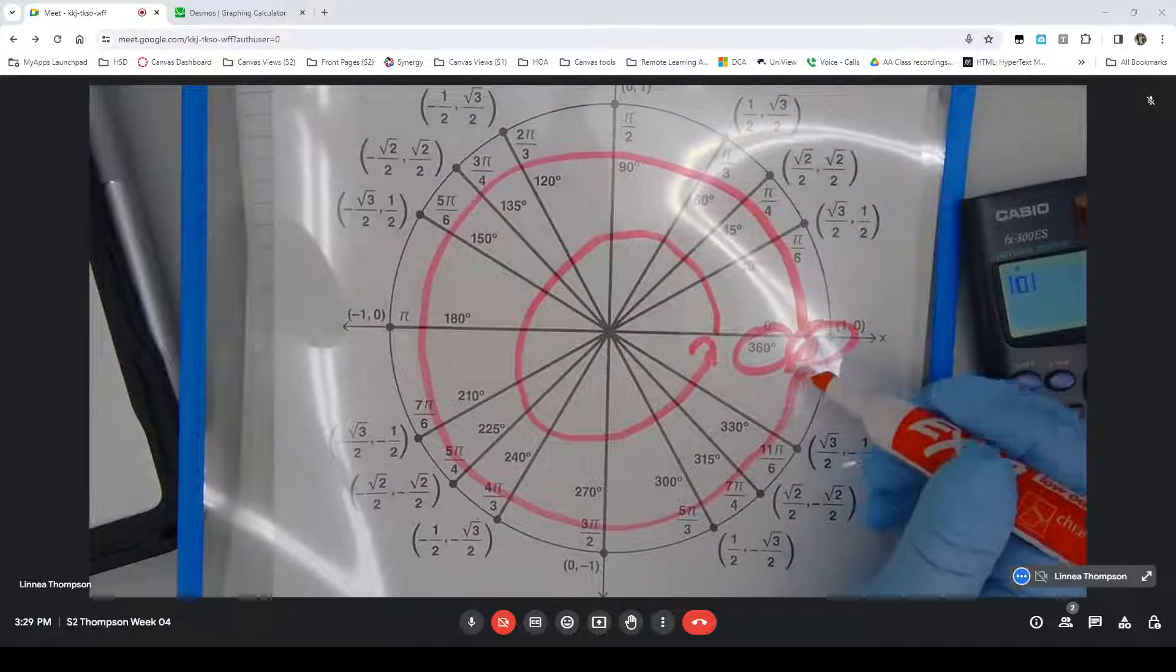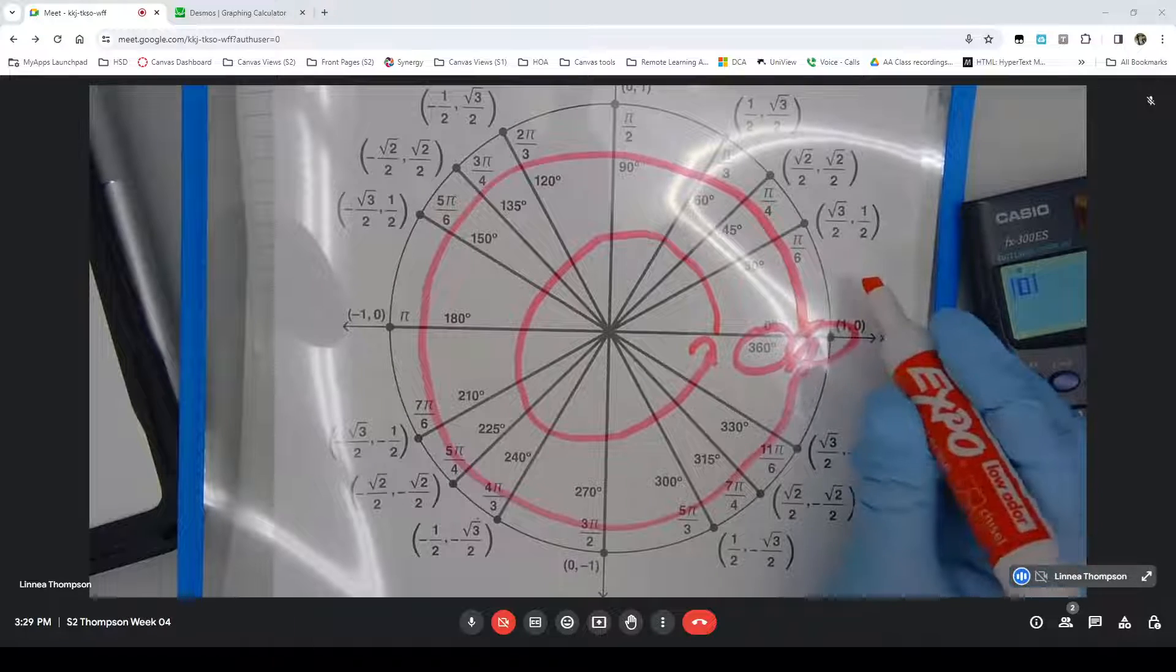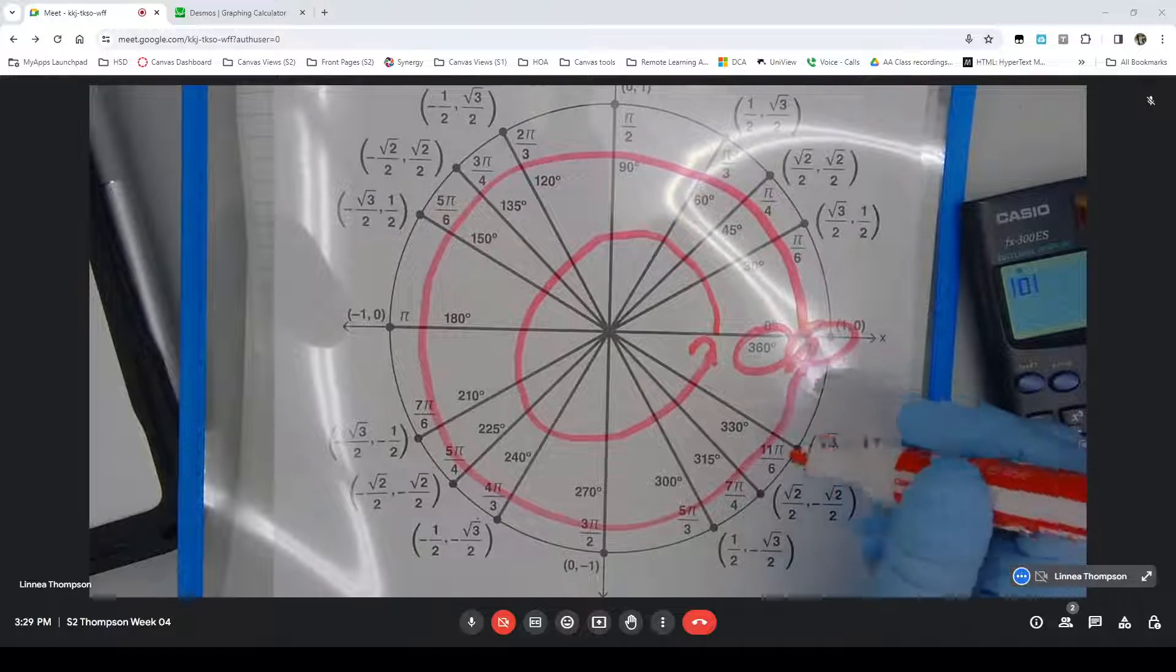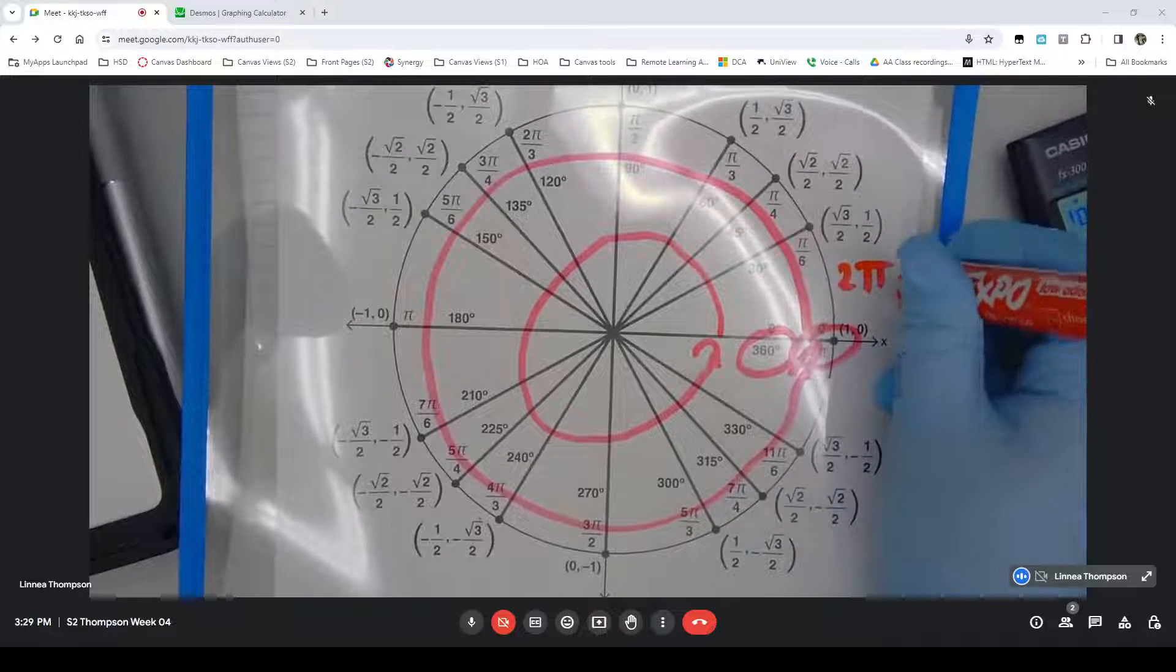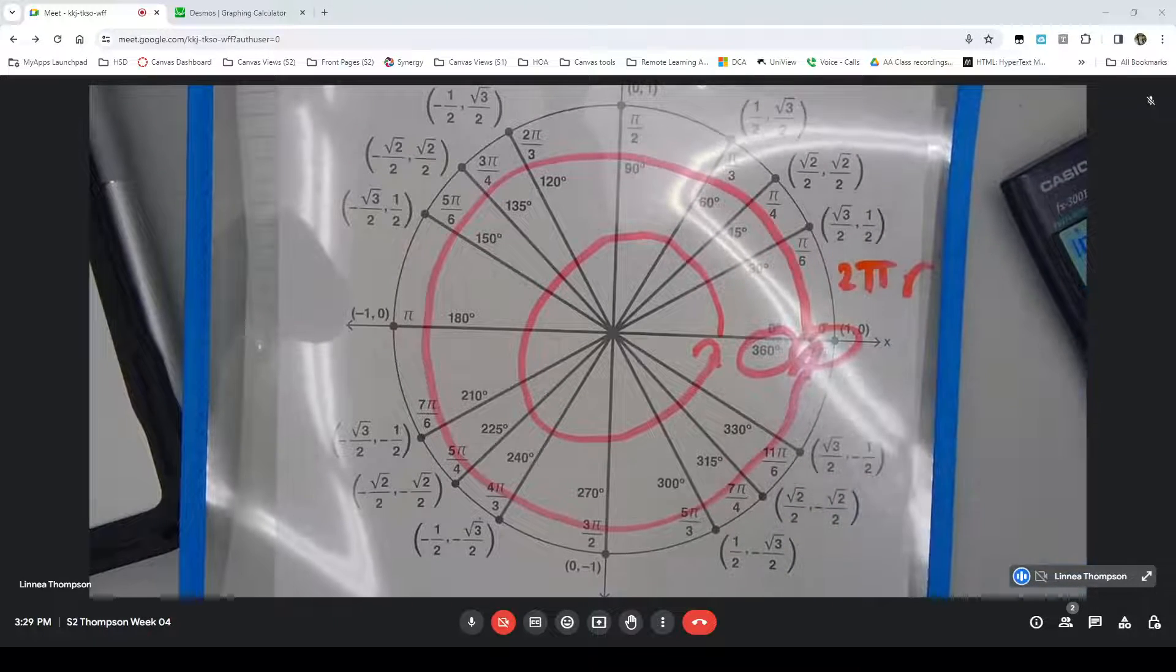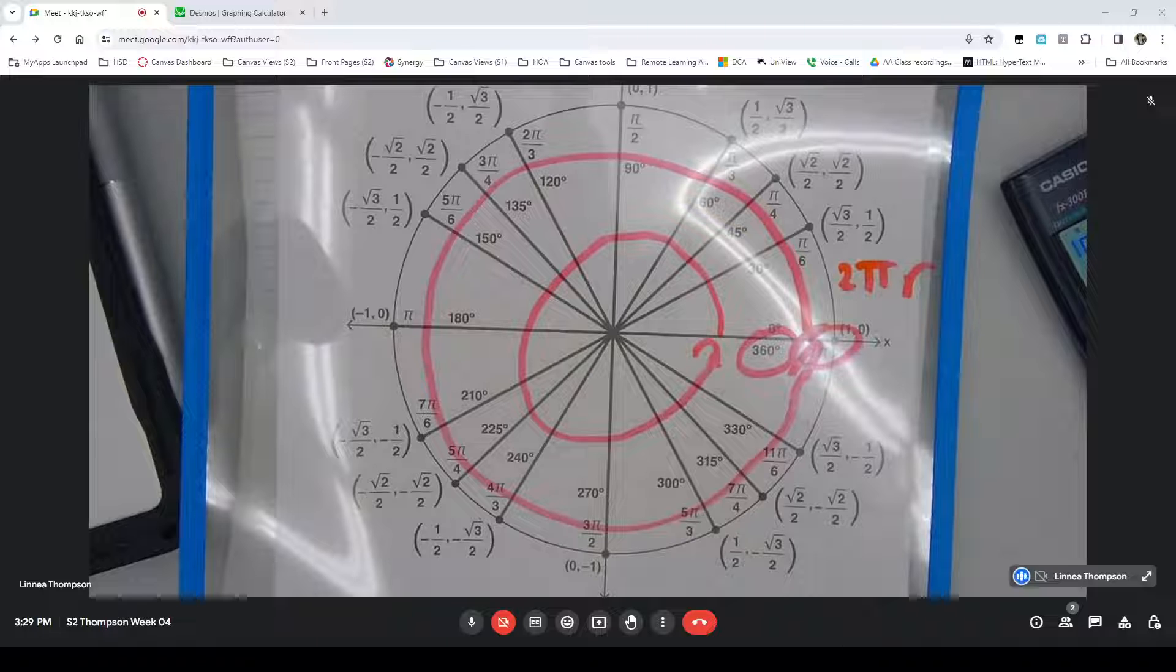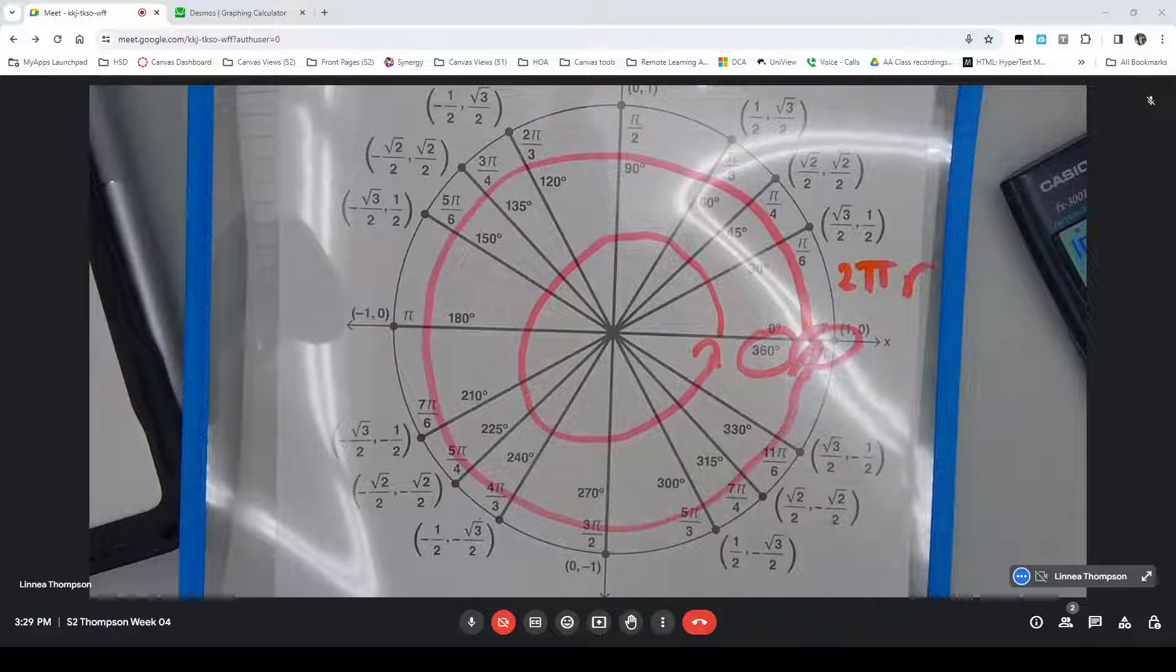That would be 2π. And that comes back to the idea of the circumference of a circle being 2π times the radius. And you will learn about that in more depth in a class that teaches you about radians.